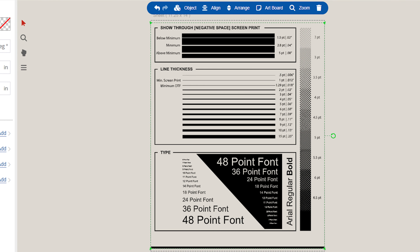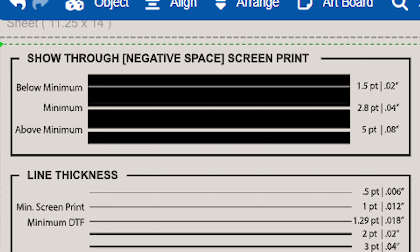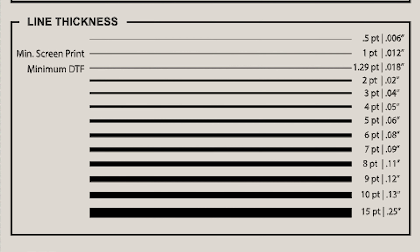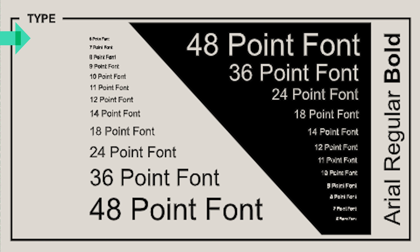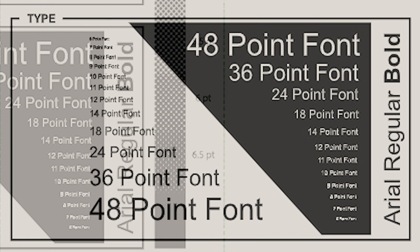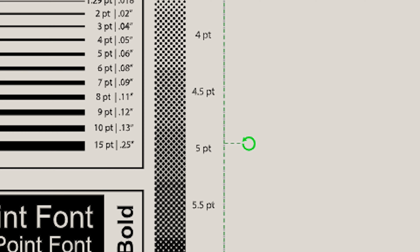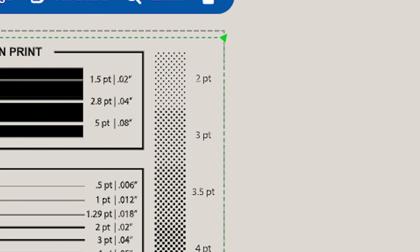For our examples, we're going to be using a simple testing chart for both screen printing and direct-to-film, with areas on our transfers printing above and below the minimum requirements. We have our show-through areas for screen printing at the top, some line weights from 0.5 point to 15 point, and text two ways — one as positive ink, and then knocked out as negative space to the garment color. On the side, we have a stylized halftone drawdown starting at two points for the dot size, just for some detail reference.